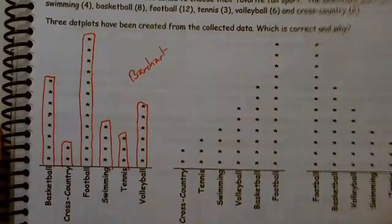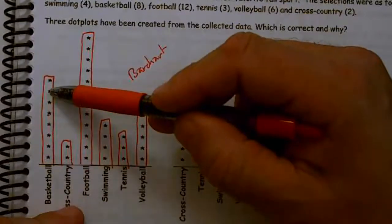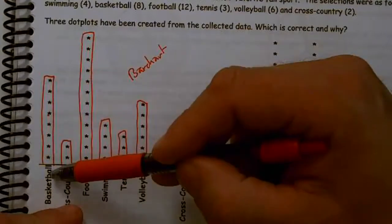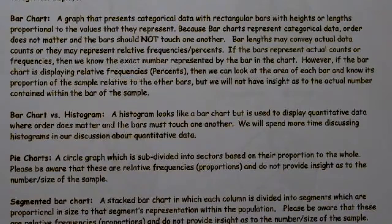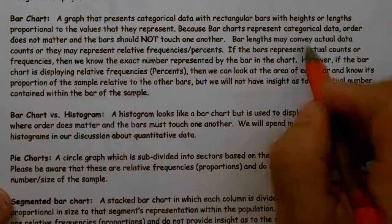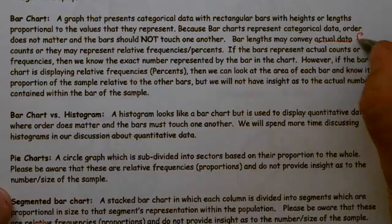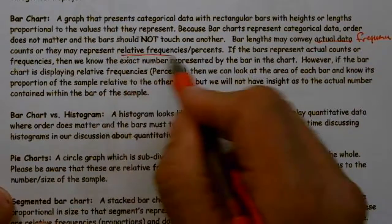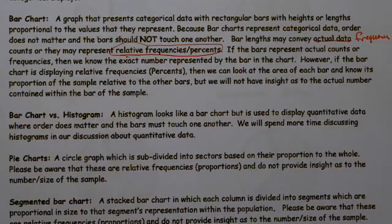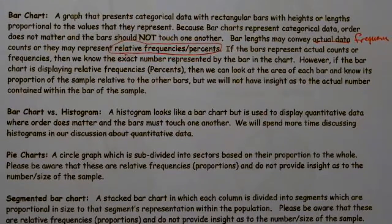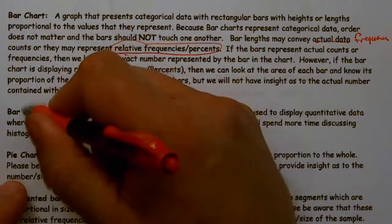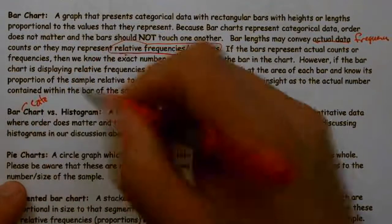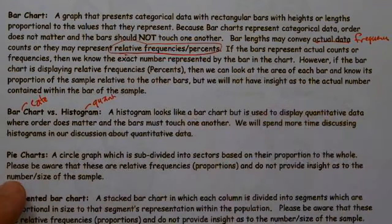The vertical height of a bar chart is either going to be the frequency — the counted data — or if we do it in percents, it'll be known as the relative frequency. So we have actual data, which is frequency, or relative frequency, which is basically percents. There's a lot of confusion between a bar chart versus a histogram, because they look alike. A bar chart is for categorical data, while a histogram is for quantitative data. They look exactly alike, except the bars in a histogram do touch each other, because there is an order to them.